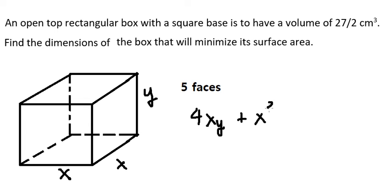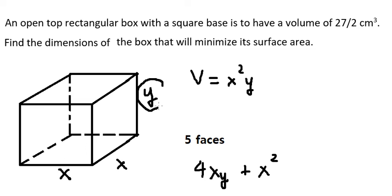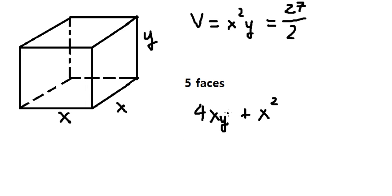And the base is x squared. We also know that the volume of this one is 27 over 2. The volume should be x squared times y, that means x multiplied by x multiplied by y, so we have x²y = 27/2.